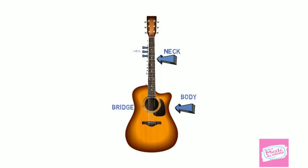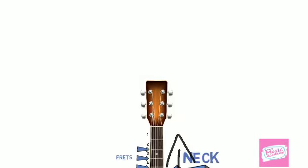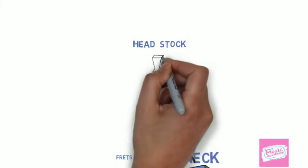On the body is something called the bridge. The bridge is where we anchor our strings. We pull the strings through, up the neck, and onto the headstock of the guitar.